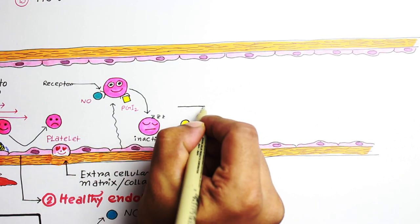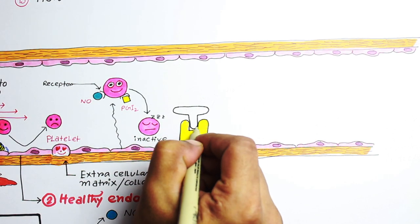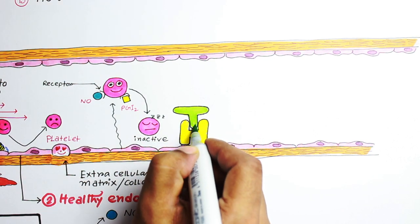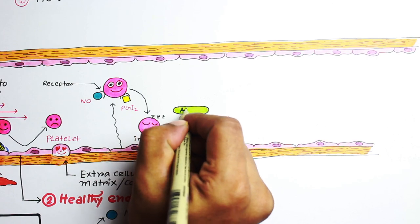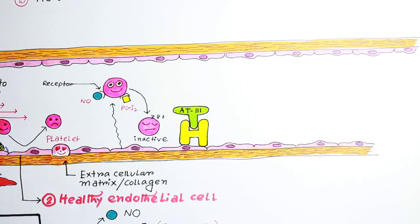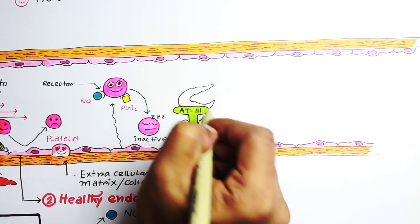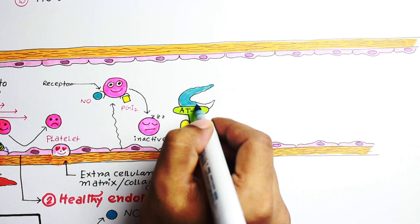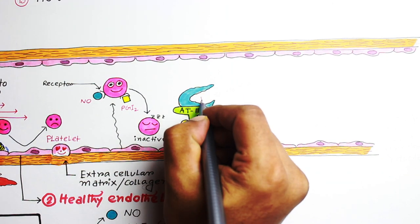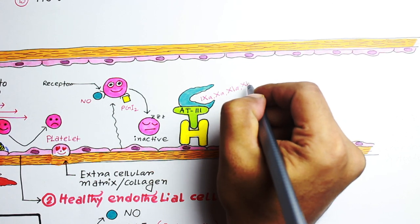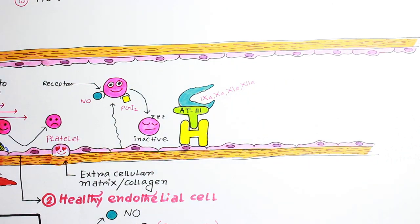Now another protein molecule which comes from the liver and binds with the heparin molecule is antithrombin 3. As soon as antithrombin 3 binds with the heparin molecule, it gets activated and starts neutralizing some important activated coagulation factors. It behaves like a biological scavenger molecule and can efficiently destroy thrombin and activated factor 9, factor 10, factor 11, and factor 12.